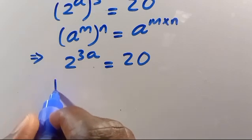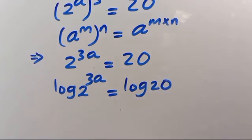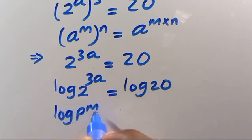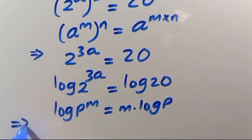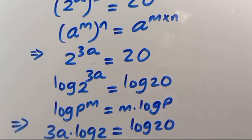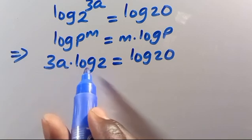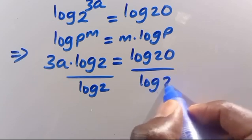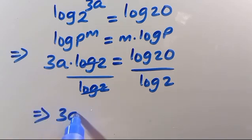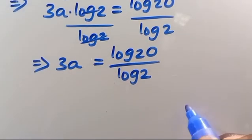Then let us introduce log to both sides of this expression in order to have 3A in base. So we have log 2 to the power of 3A equals log 20. From here, when we have log P to the power of M, we can bring the power down as M times log P. So therefore we are going to have 3A times log 2 equals log 20. Then let's divide both sides by the coefficient of 3A, which is log 2.